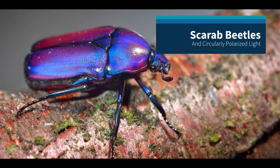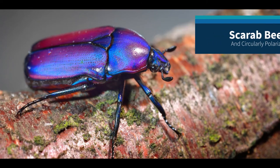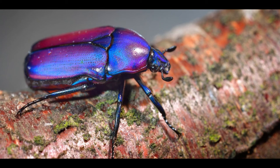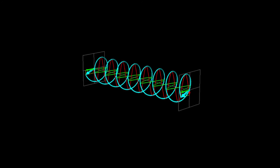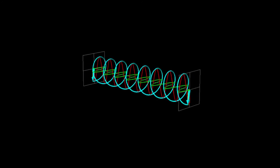Now, there is a particularly interesting insect-light interaction that occurs in scarab beetles. Some scarab beetles are able to produce and detect circularly polarized light. Circularly polarized light is a mode of polarization that is extremely rare in nature. It can be created by adding two perpendicularly polarized waves with a specific phase difference of 90 degrees.